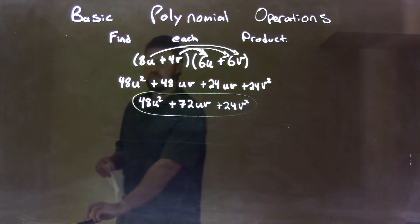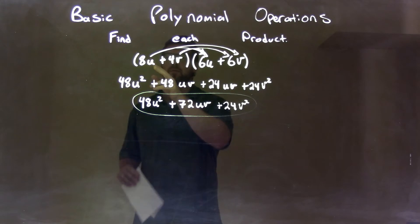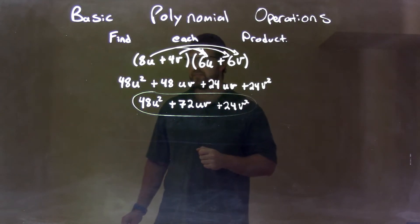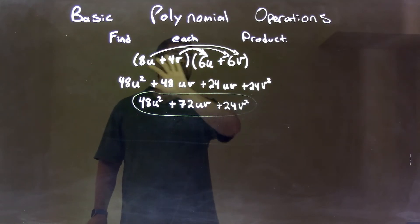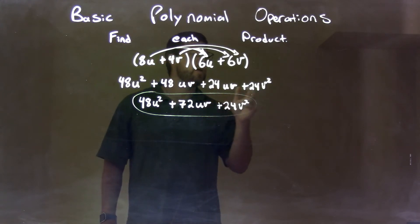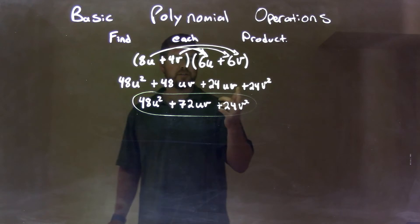So quick recap: we were given 8u plus 4v times 6u plus 6v. We distributed all that together, kept our u's and v's in line, and we got 48u squared plus 48uv plus 24uv plus 24v squared. Combine our like terms, which is just the 24 and 48uv, and that goes to 72uv. So our final answer is 48u squared plus 72uv plus 24v squared.